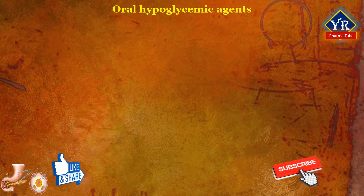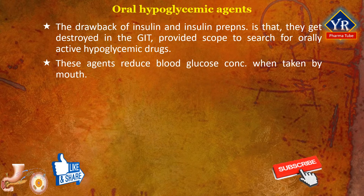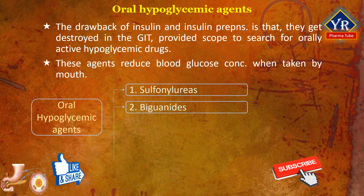Oral hypoglycemic agents. As we learned from the previous video, the drawback of insulin and insulin preparations is that they get destroyed in the gastrointestinal tract. This has provided a scope to search for orally active hypoglycemic drugs. The oral hypoglycemic agents reduce blood glucose concentration in type 2 diabetic people. These drugs are taken by mouth and belong to the chemical classes of sulfonylureas and biguanides.